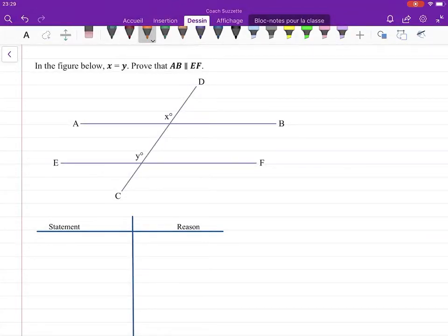Hello and welcome back. Let's do a proof. We are given in the figure below x equals y. Prove that AB is parallel to EF.